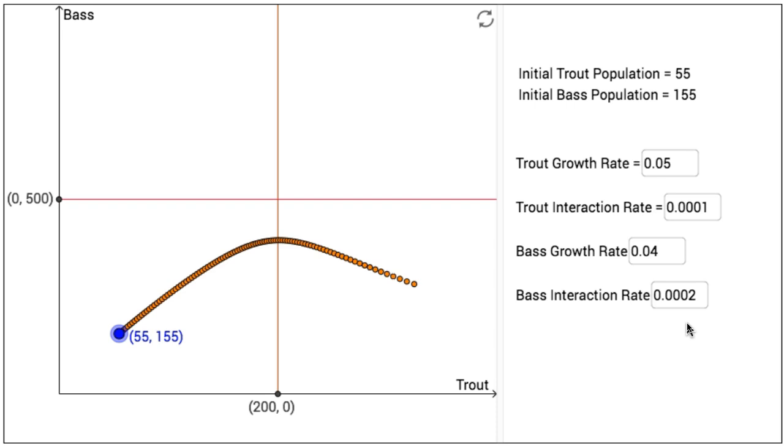So in this interactive figure, the initial trout growth rate is set at 0.05, or 5%, which means in each interval of time, the population of trout increases by 5%. The bass growth rate is initially set at 0.04, or 4%. So for each unit of time moving forward, the population of bass will increase by 4%.